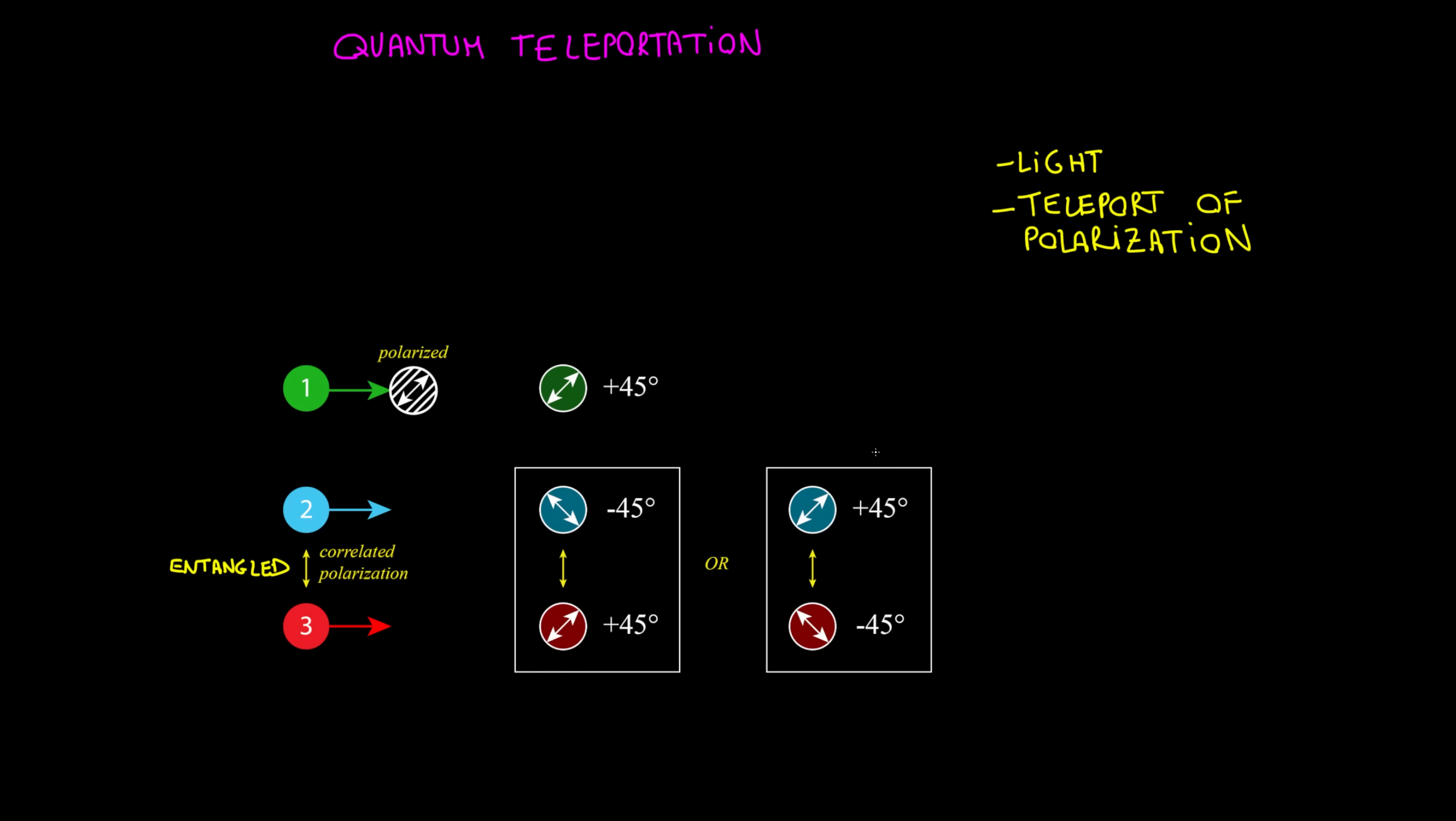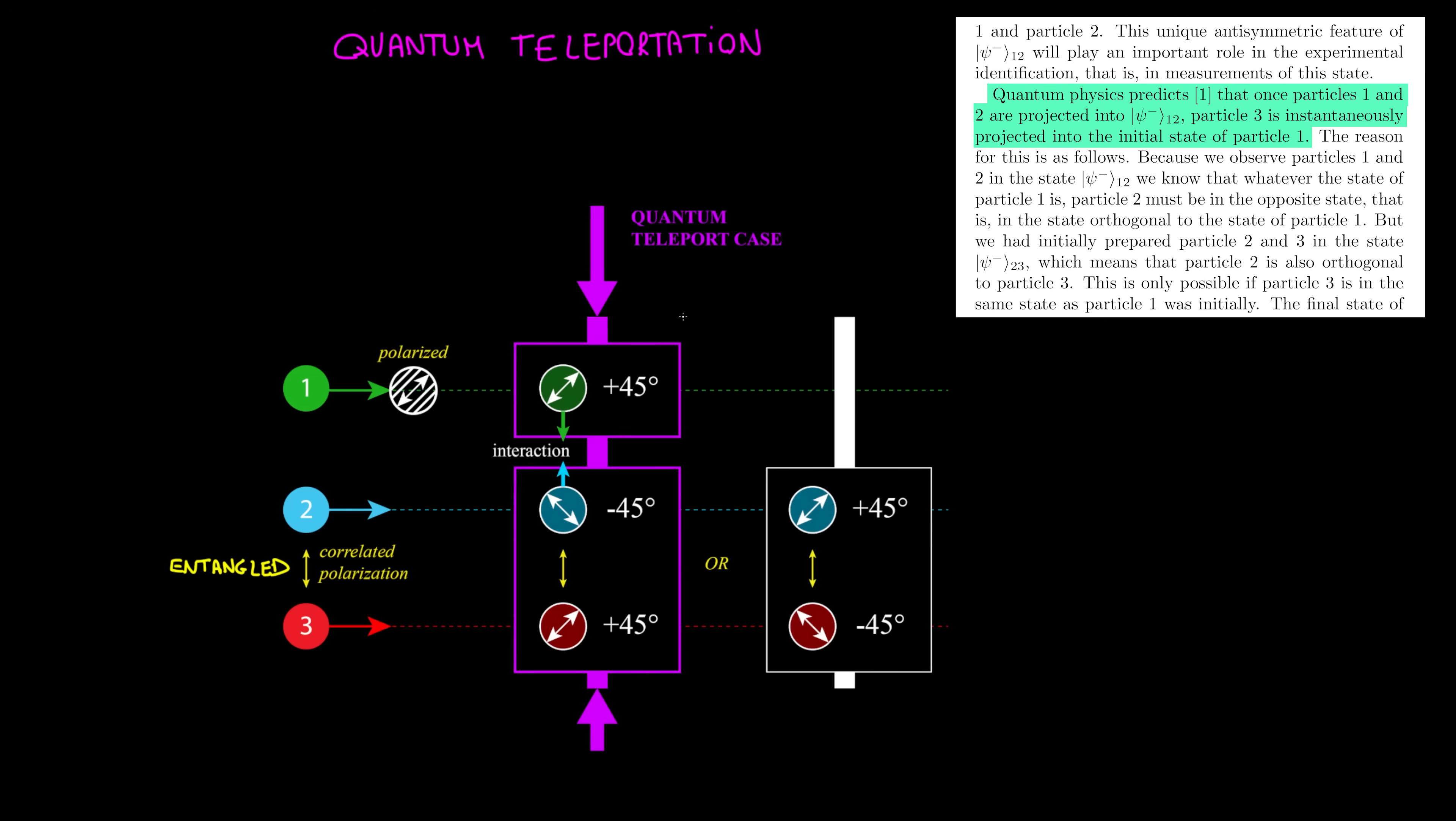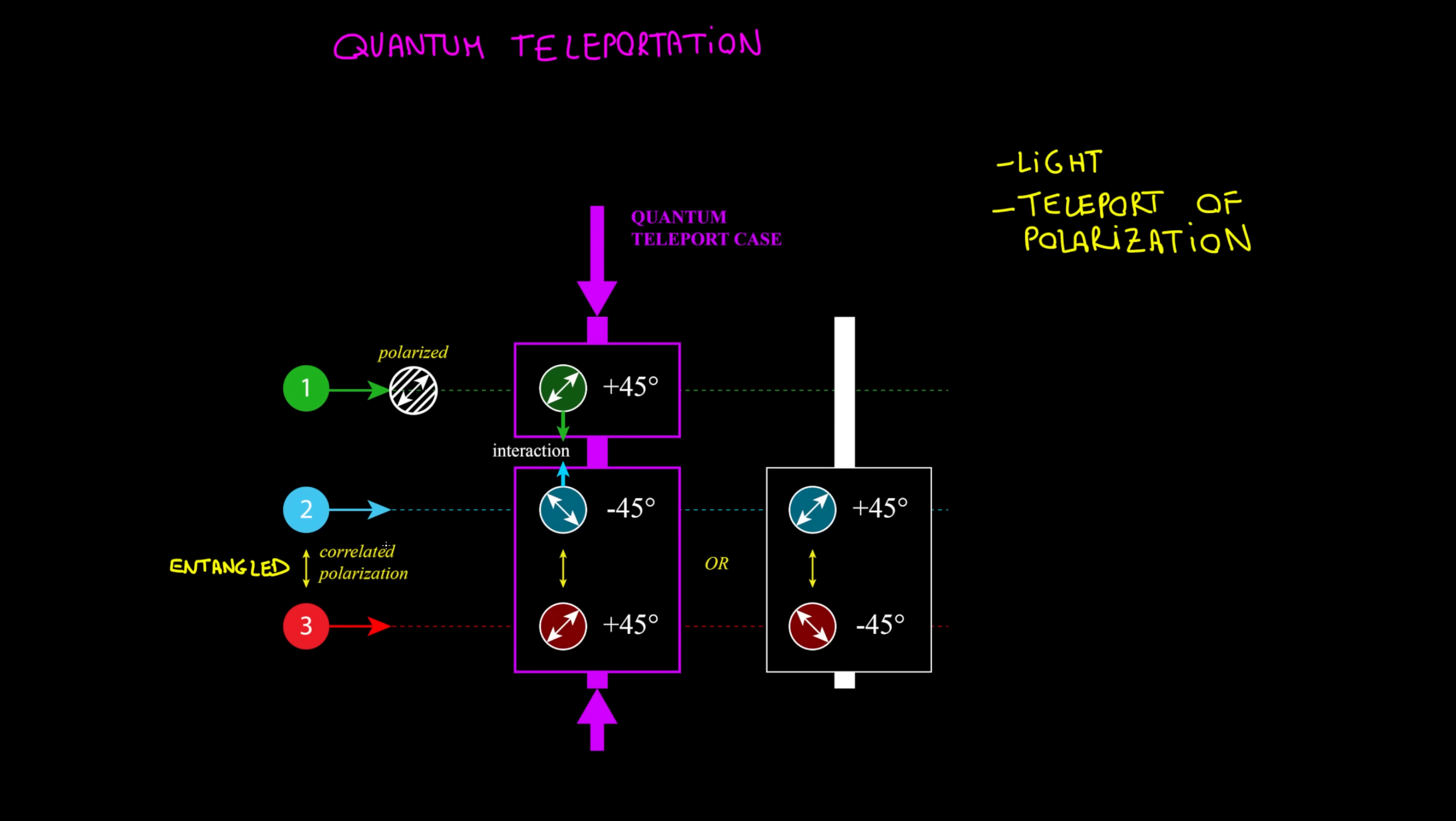Photon 1 is polarized too and is made to interact with photon 2. As we see from the diagram, we can have more combinations. Experimental states this is the specific case. Thanks to entanglement, this interaction should teleport the polarization of photon 1 into photon 3.